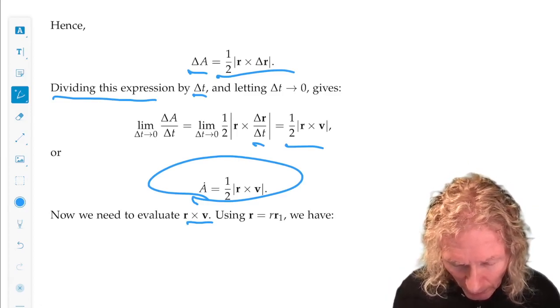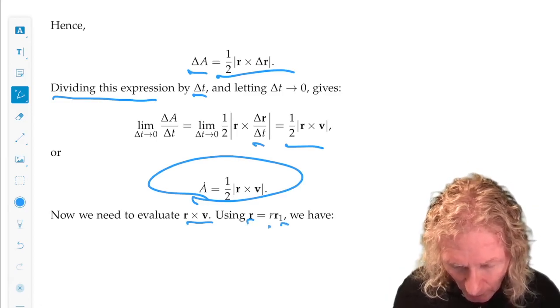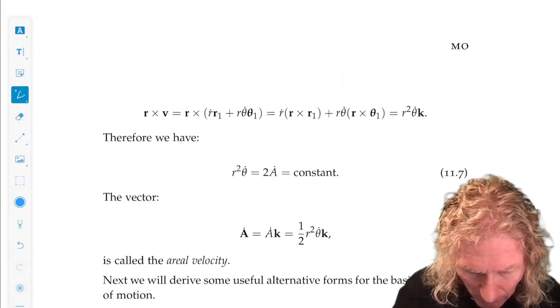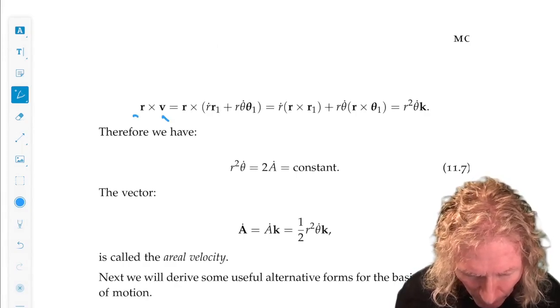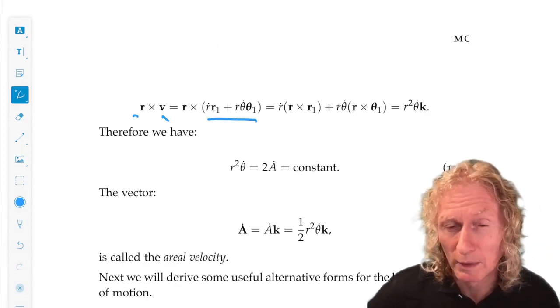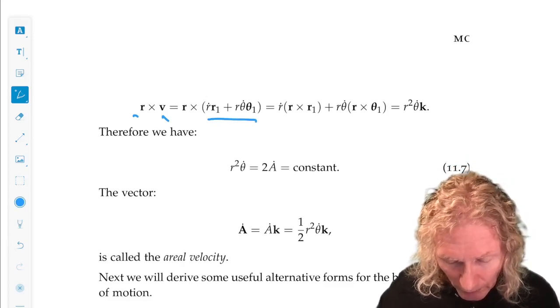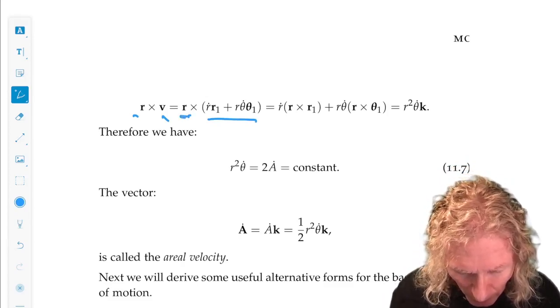So r, the position vector, is magnitude r times r̂. And v, we've computed the velocity vector for this before in these polar coordinates in the plane. We now just do cross products.